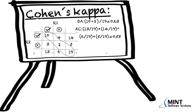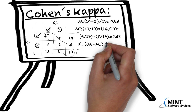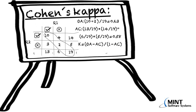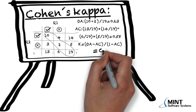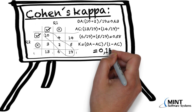For Cohen's Kappa — this coefficient — we subtract 0.58 from the observed agreement. The formula is: (observed agreement − agreement by chance) / (1 − agreement by chance). We divide by (1 − agreement by chance) to standardize the coefficient, so that a value of 1 indicates complete agreement between the two raters and a value of 0 indicates no agreement at all. In this example, Cohen's Kappa is 0.12.